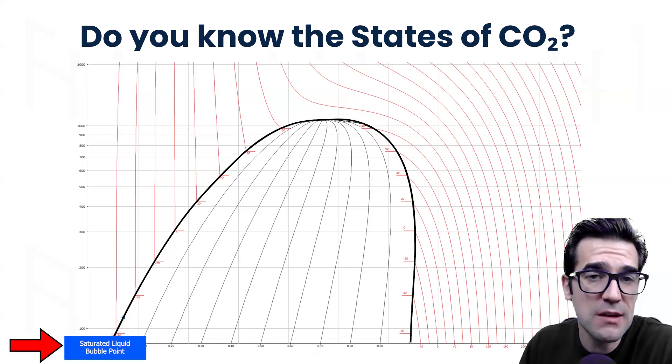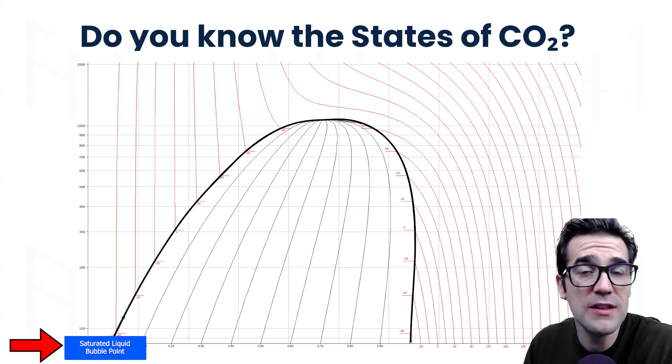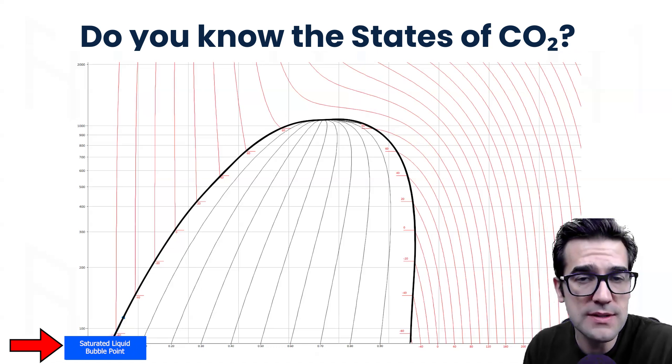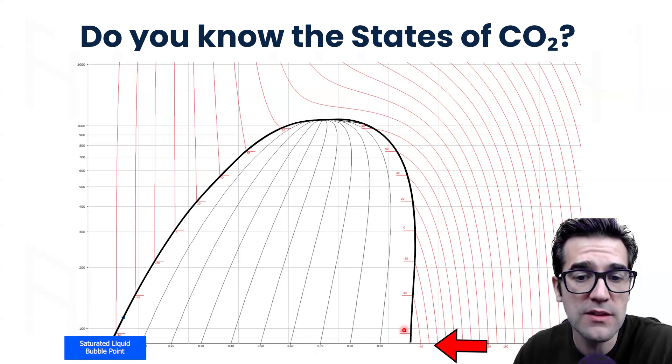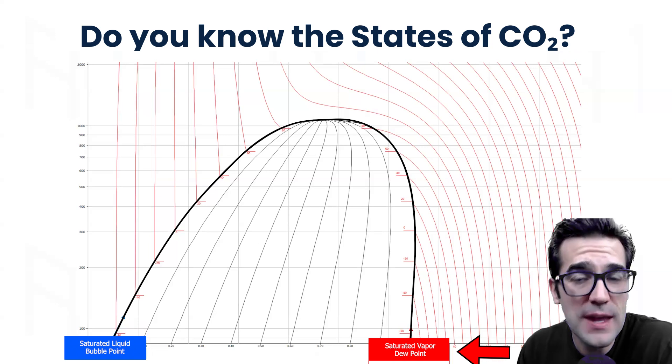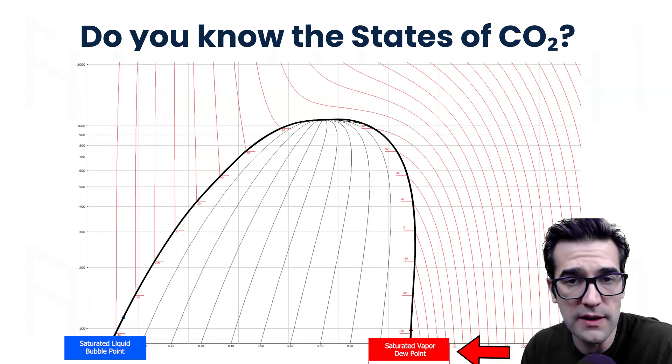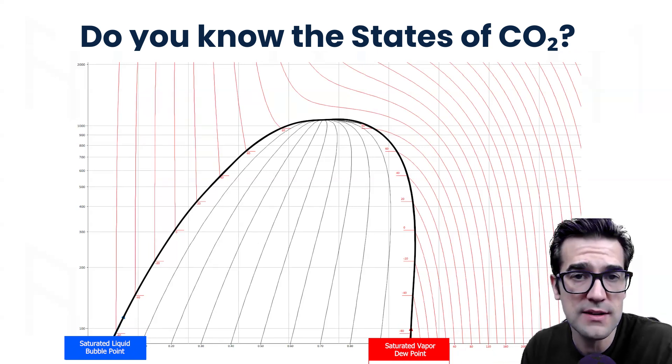The first step is understanding what that bell curve does. On the left side of this curve is the saturated liquid side or the bubble point side. As we travel all the way up and around to the other side, this is the saturated vapor side, the dew point side. This is very important to understand in CO2.